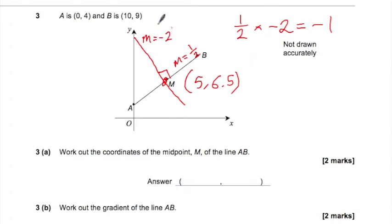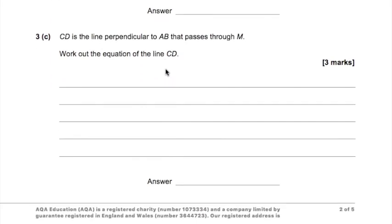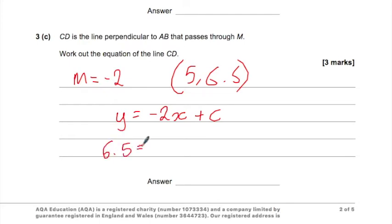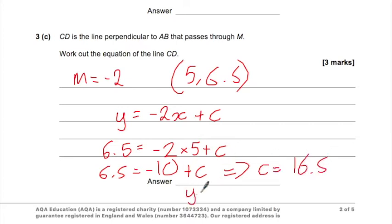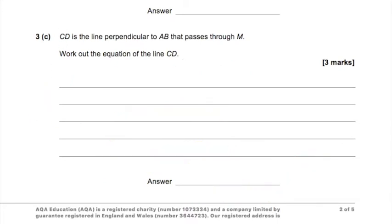Okay, so let's think what we know now. We know our line has a gradient of minus 2, and it goes through the point 5, 6.5. So our M is minus 2, goes through 5, 6.5. So the way I would do this is, well we can say Y must equal minus 2X plus C, because we know M is minus 2, and then sub in our point. So we know Y is 6.5 when X is 5. So we've got 6.5 equals minus 10 plus C, so C must be 16.5. So final answer, Y equals minus 2X plus 16.5.